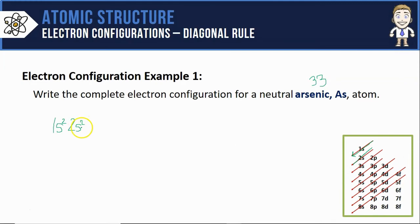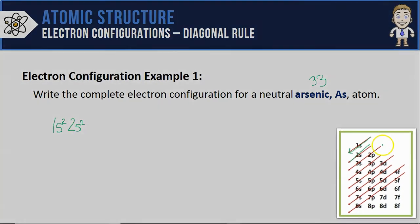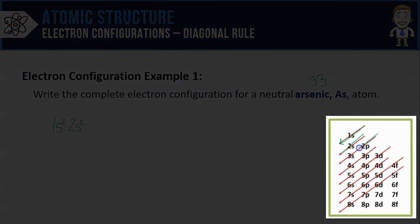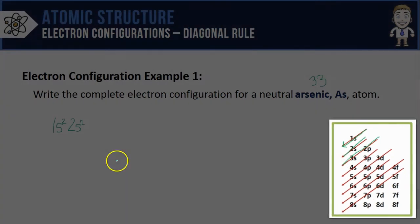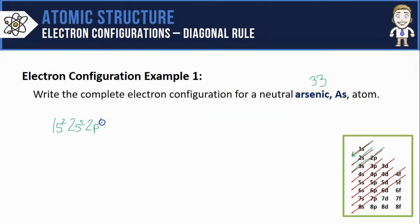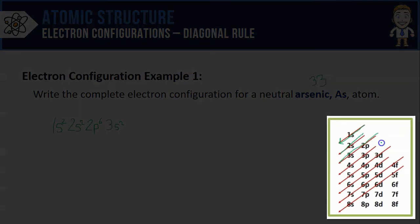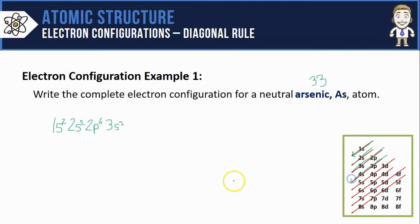After the 2s, I fill the 2p's, followed by the 3s orbitals. My 2p's can hold 6 total electrons. After that will come the 3s, which can hold 2. Here's where you really need the diagonal rule, because after the 3s, my arrow tells me first the 3p, then the 4s orbitals. So here's my 3p⁶, then the 4s, which can hold 2.